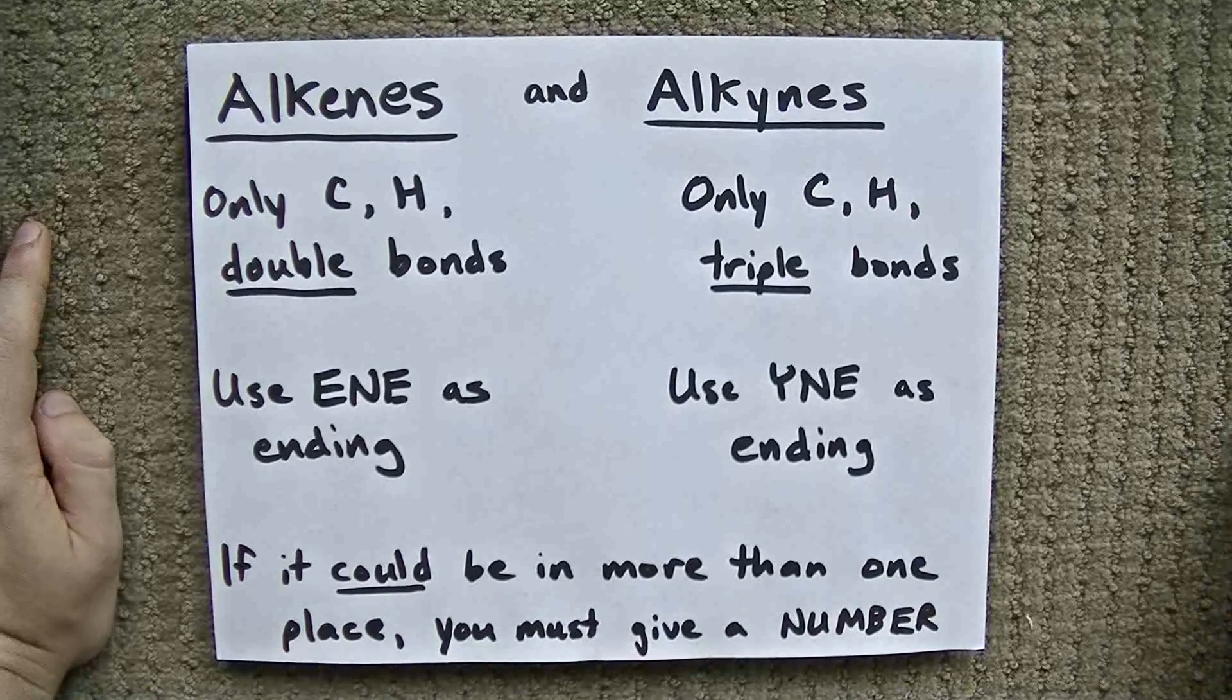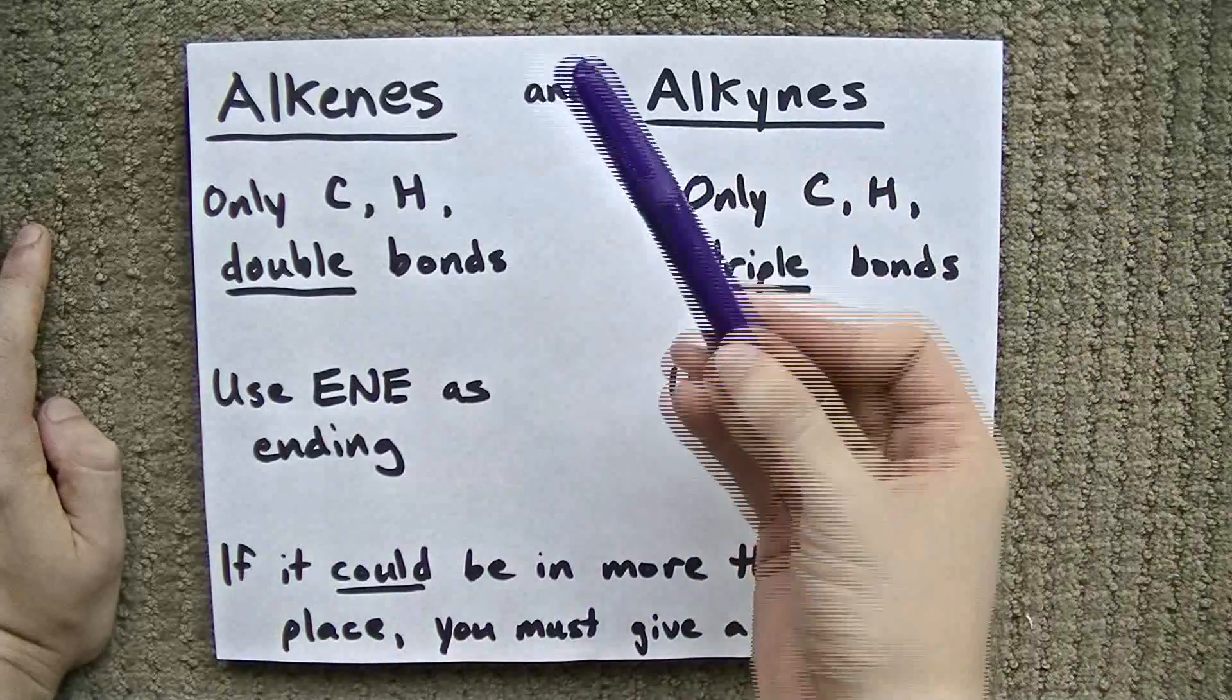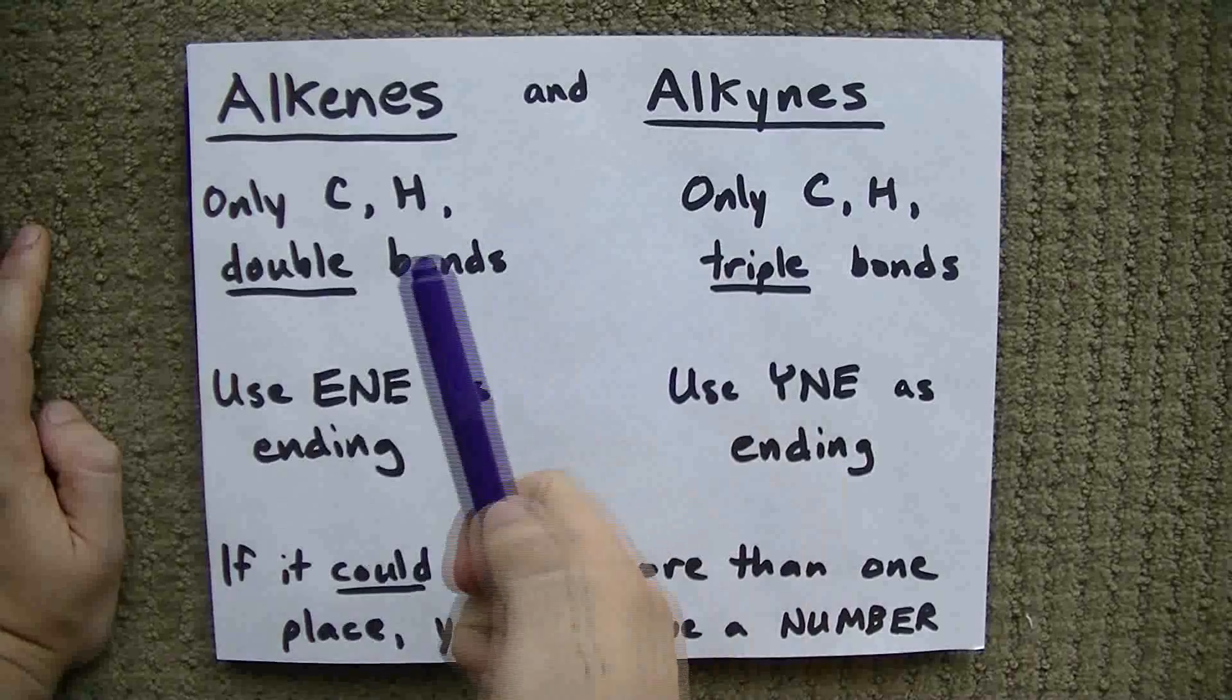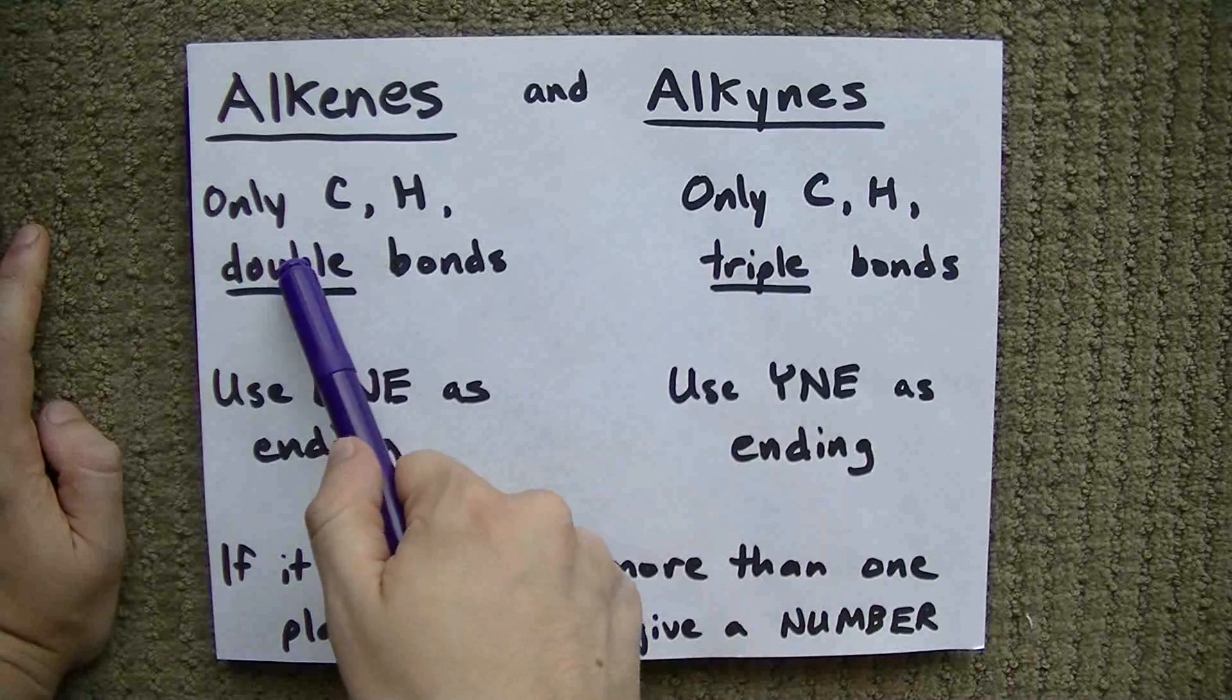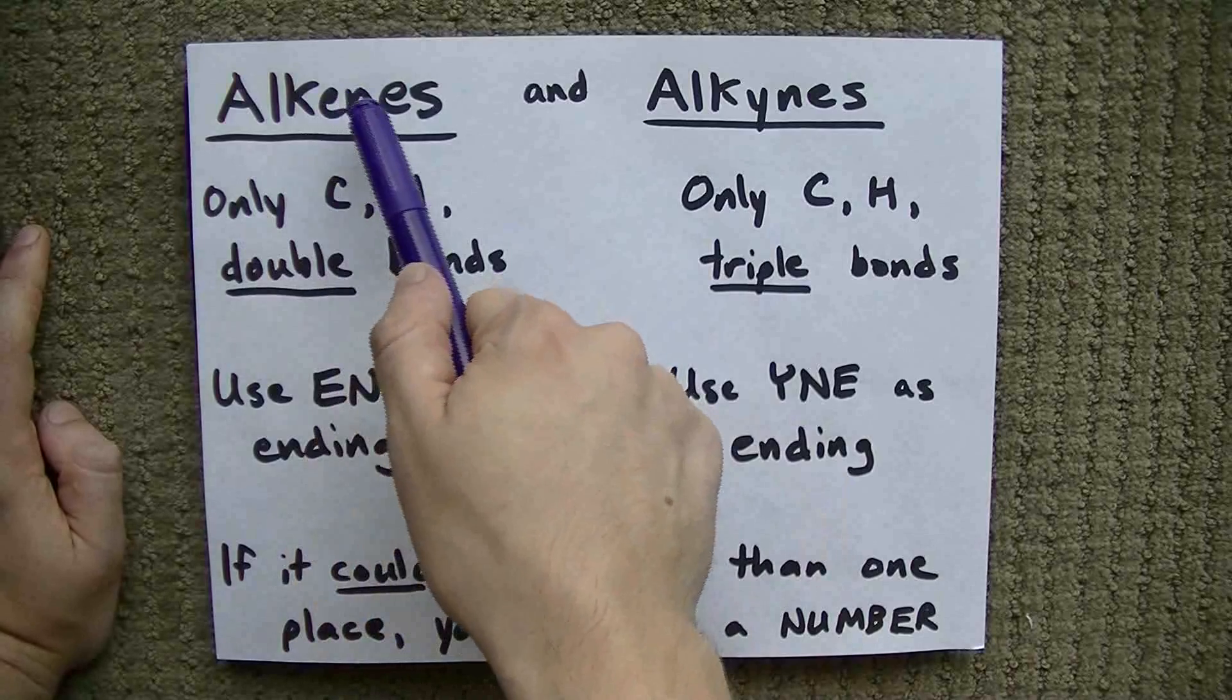Alright guys, how would you like to learn about alkenes and alkynes? Alkenes are made only of carbon, hydrogen, and mostly single bonds, but they also need to have a double bond in it. Having a double bond is what makes it an alkene.